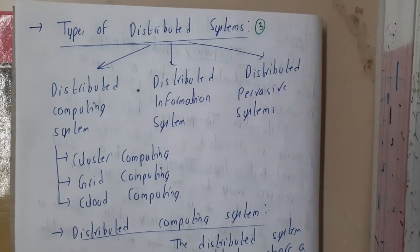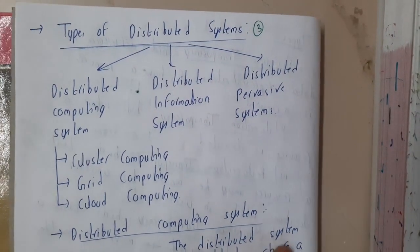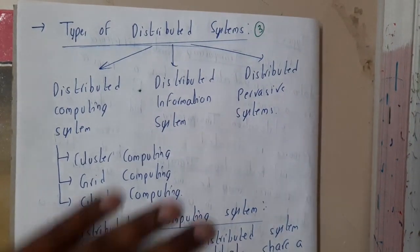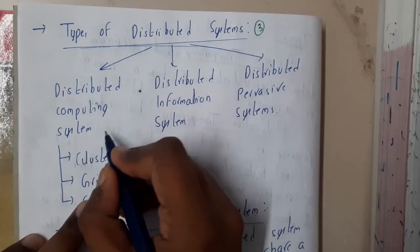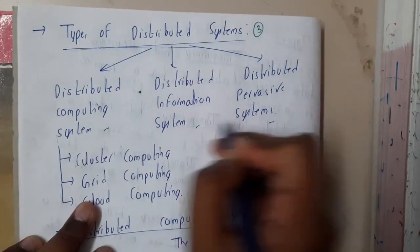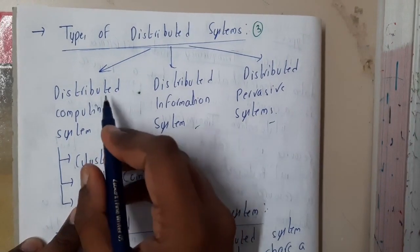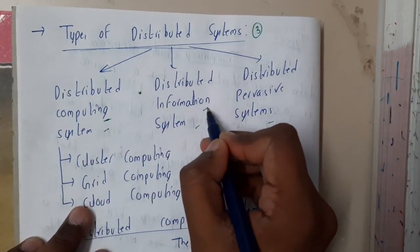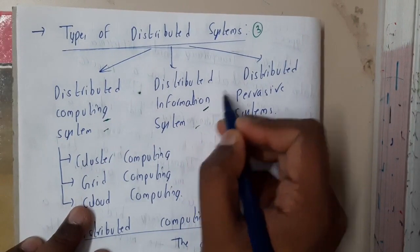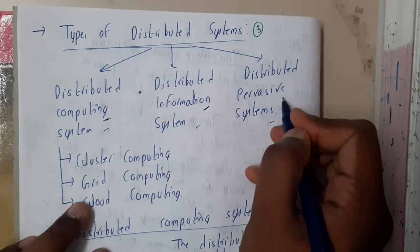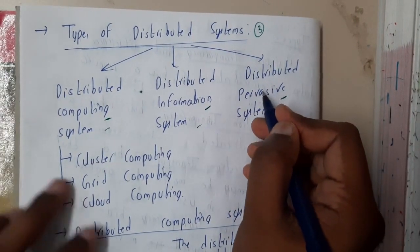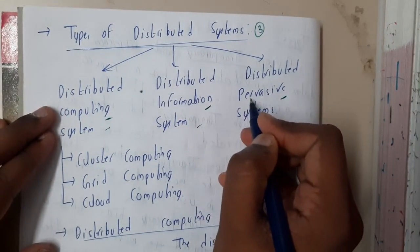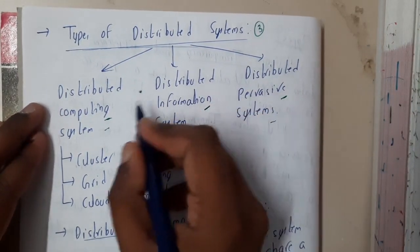Hello guys, we are back with our next lecture. In this lecture, let us go through the types of distributed systems. They are divided into three different types: the first is distributed computing system, the second is distributed information system, and the third is distributed pervasive system.